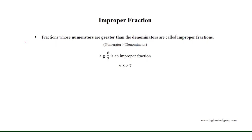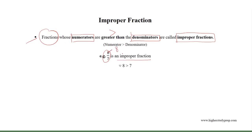Improper fraction. Fractions whose numerators are greater than the denominators are called improper fractions. For example, 8 over 7 is an improper fraction, where the numerator 8 is greater than the denominator 7. Thus, 8 over 7 is greater than 1. So, the values of improper fractions are always greater than 1.